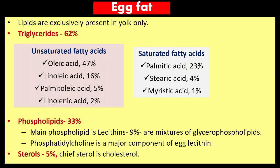Egg fat: lipids are exclusively present in the yolk. Triglycerides make up 62%. Unsaturated fatty acids present include oleic acid, linoleic acid, and linolenic acid; saturated fatty acids include palmitic acid, stearic acid, and myristic acid. Phospholipids make up 33%, with lecithin (desithin) at 9%; phosphatidylcholine is a major component of egg lecithin. Sterols are 5%, and the chief sterol is cholesterol.